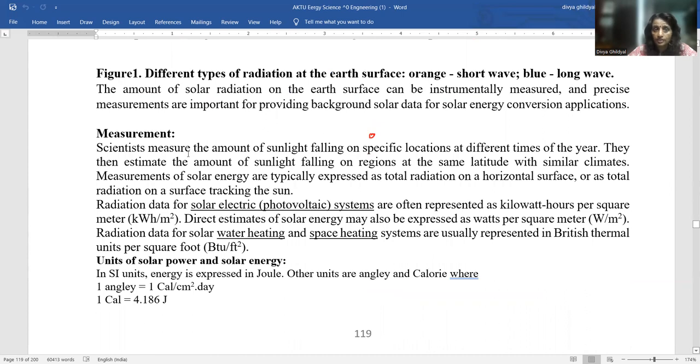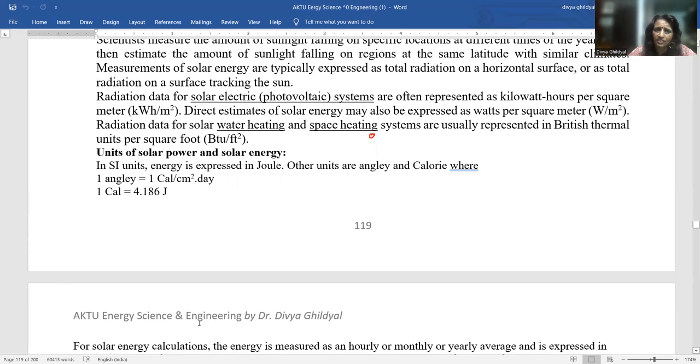Scientists first measure the amount of sunlight that is falling on a specific location at different times of the year. Then they estimate the amount of sunlight falling on the region at the same latitude with similar climatic conditions. Measurements of solar energy are expressed as total radiation on a horizontal surface or as total radiation on a surface tracking the sun. Units of solar power and solar energy in SI unit, section A question. Energy is expressed in joule. Other units that are used are calorie, which is a very common unit. You can mention calorie anywhere.